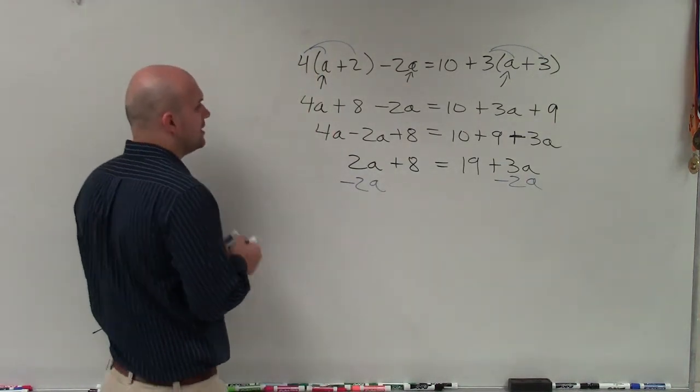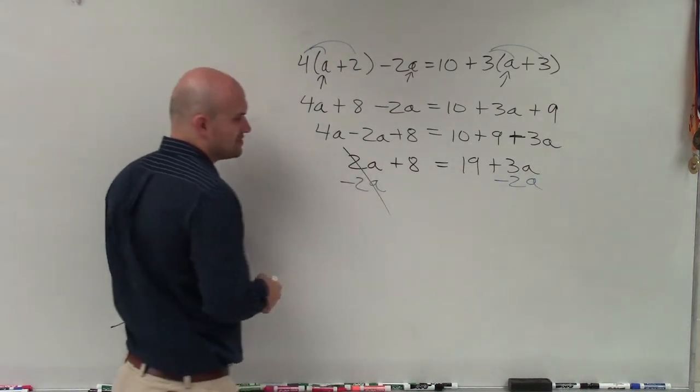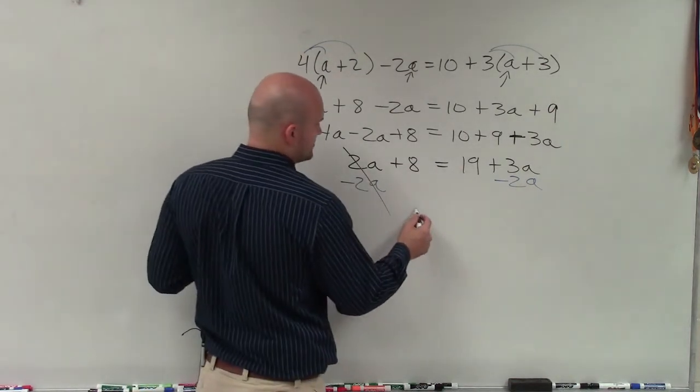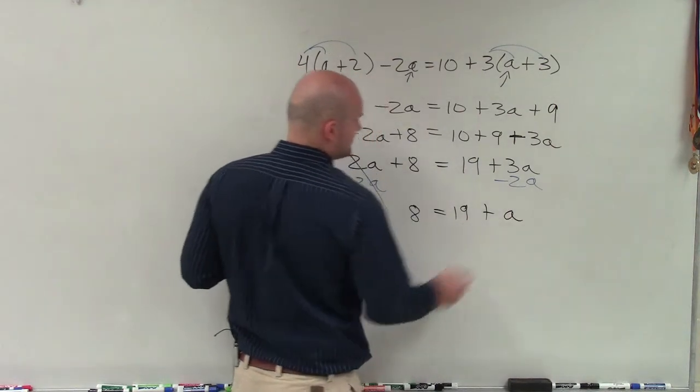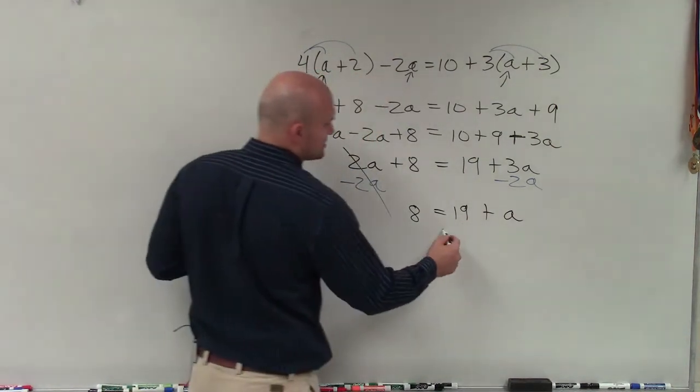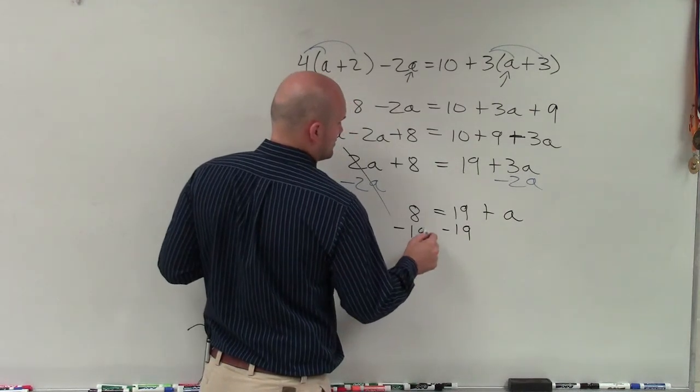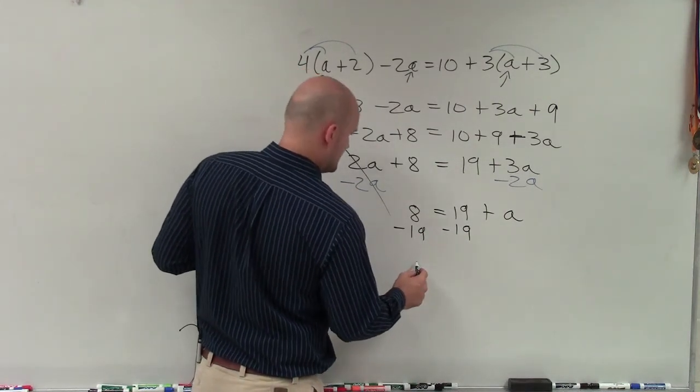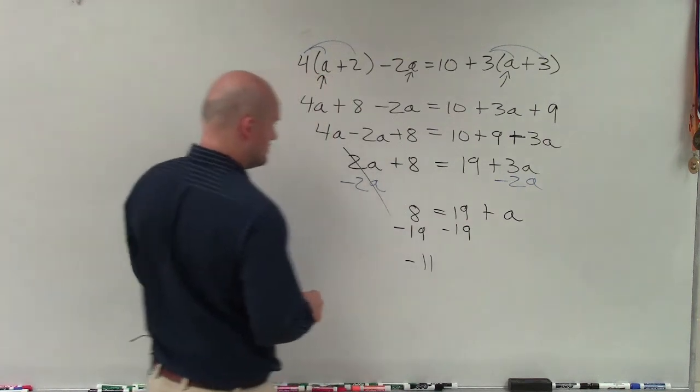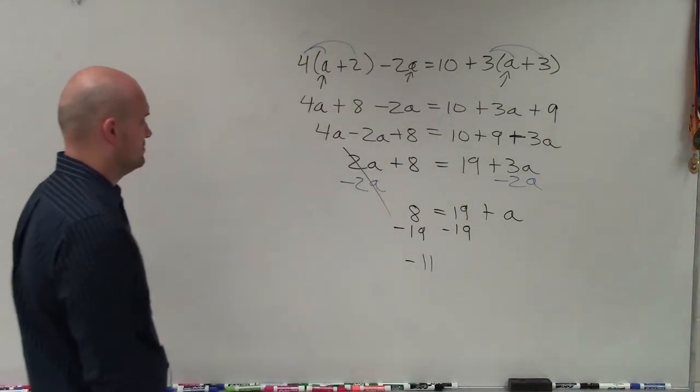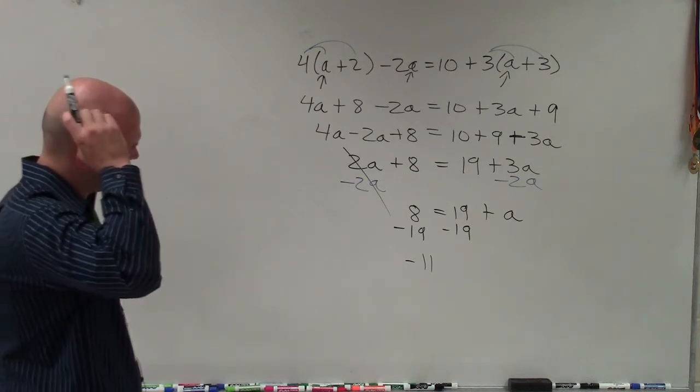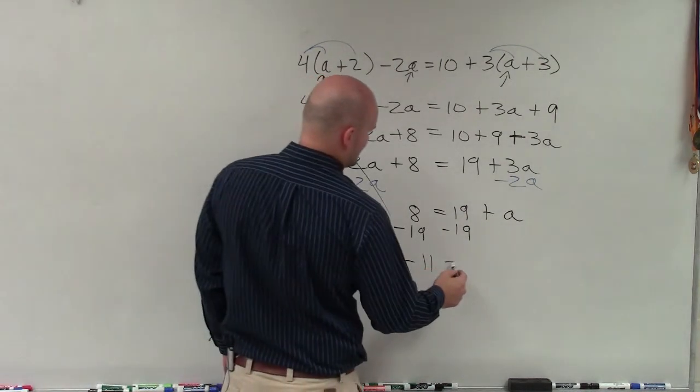All right? So, therefore, that subtracts to 0a, which is just 0. So I have 8 equals 19 plus a. Now we have a one-step equation. Subtract, and then I'll have negative 11, right? Plus equals positive a.